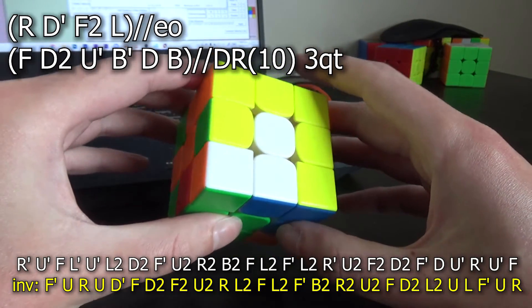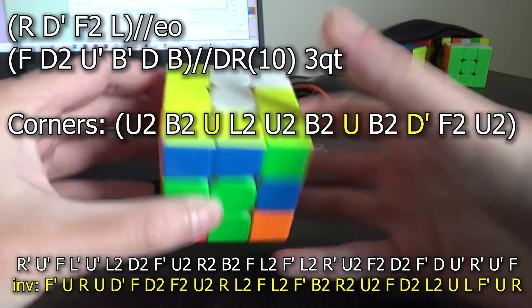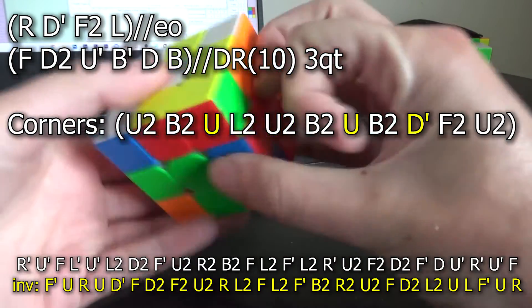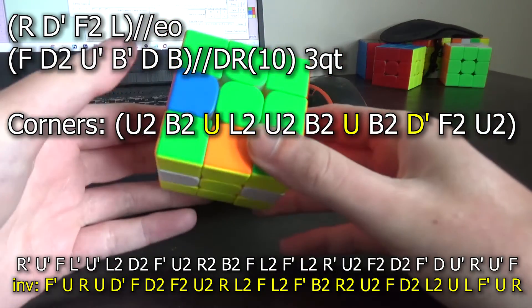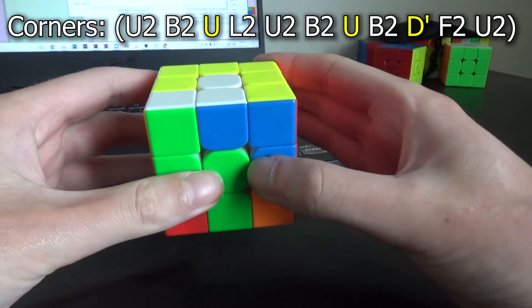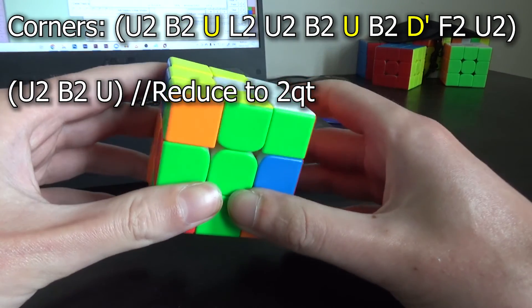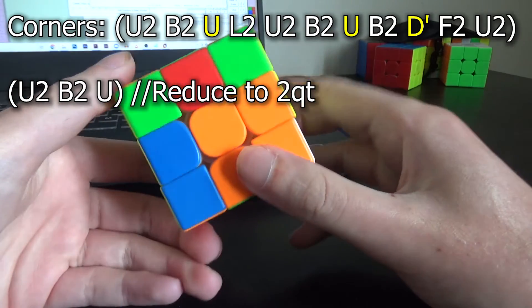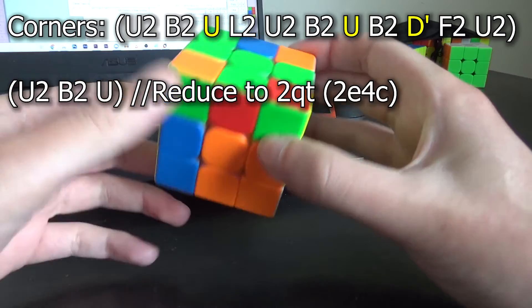But the first thing I look at is corners, and my corner solution is U2 B2 U L2 U2 B2 U B2 D' F2 U2. The last half turns don't matter in terms of HTR, but first thing I'll try is just doing U2 B2 U for my corner solution to reduce it to 2 quarter turns, and that leaves us with 2e4c which is very nice.